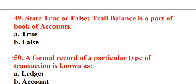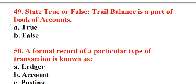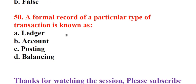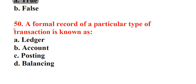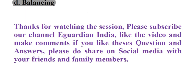Question 49: State true or false. Trial balance is a part of book of accounts. A. True, B. False. Answer: A. True. Question 50: A formal record of a particular type of transaction is known as. A. Ledger, B. Account, C. Posting, D. Balancing. Answer: D. Balancing. Thank you.